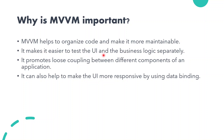MVVM makes it easier to test the UI and the business logic separately. We don't need both to depend on each other — we can test the UI and business logic independently. It also promotes loose coupling, meaning loose dependency between the different components of an application. Each component is loosely coupled, so modifying one part will not break the whole project.